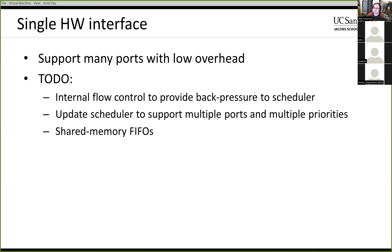There are a couple of things needed here. One is I need to get the internal flow control working — if each interface is totally separate with its own streaming interfaces, it doesn't matter if things get backed up. But if we have multiple ports connected to one interface, we have to make sure we don't have head-of-line blocking. The second thing is to rework the scheduler to support multiple ports and multiple priorities, so we don't need one scheduler per port — just one scheduler where you can assign what port and priority level to each of the individual queues.